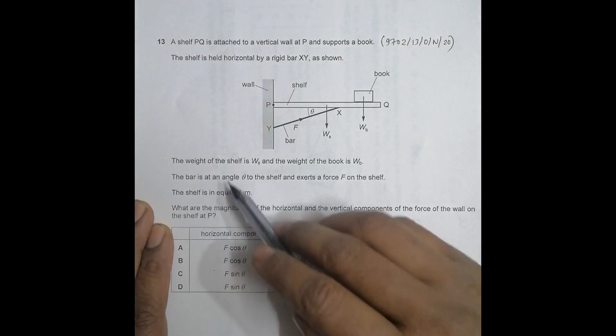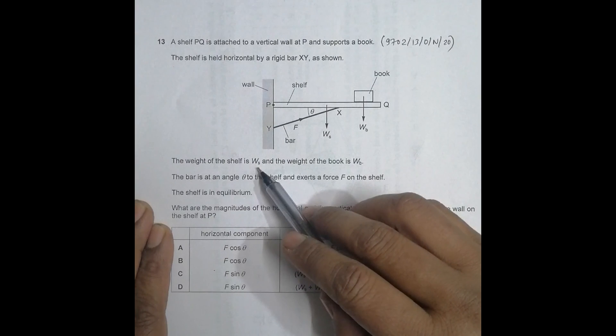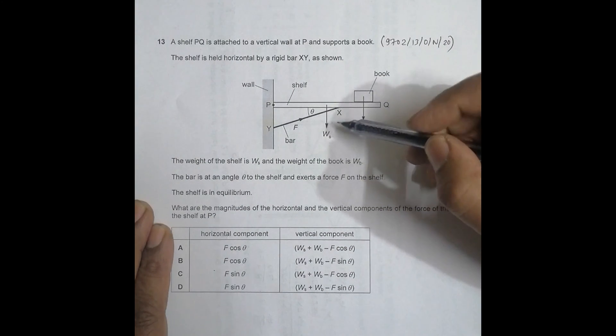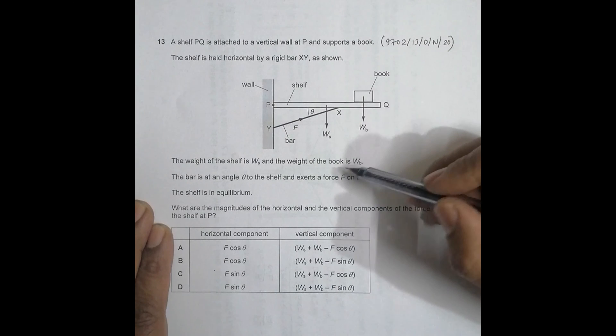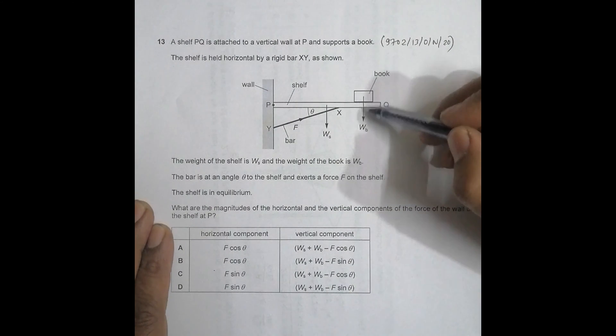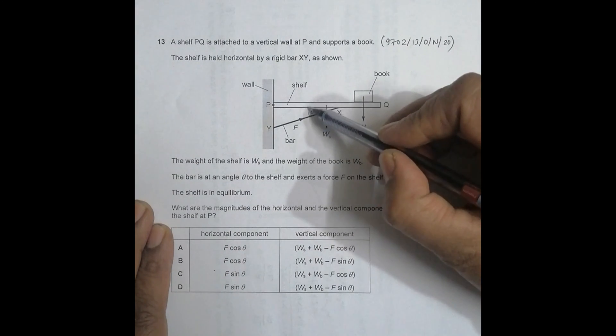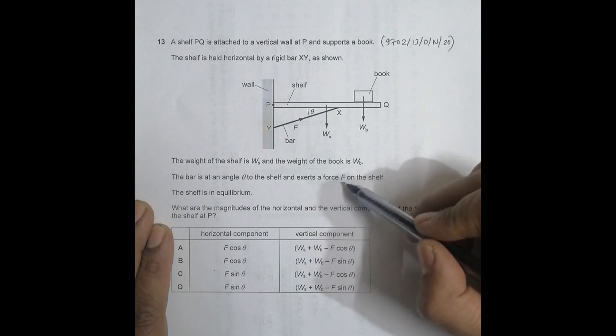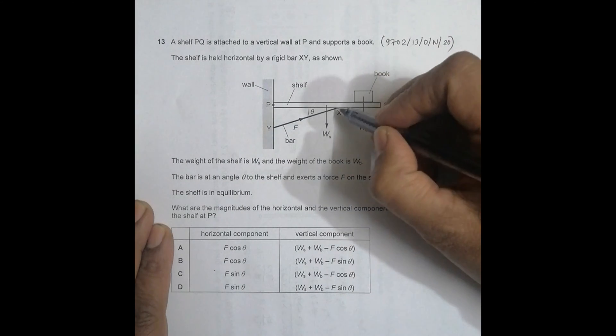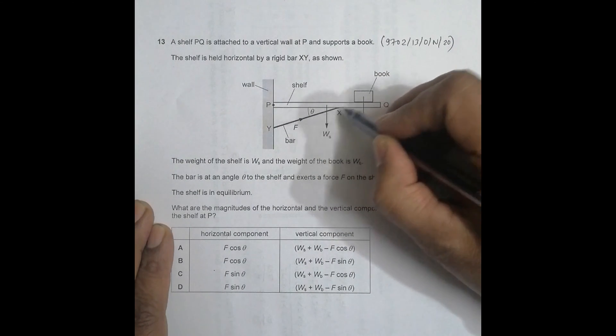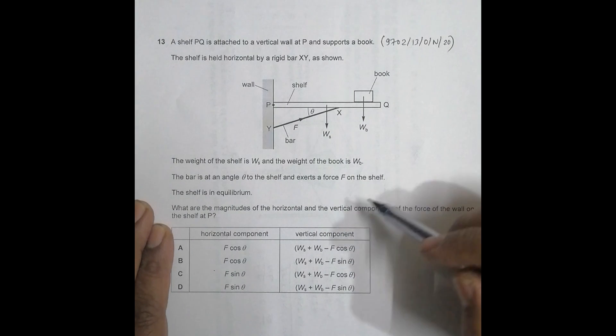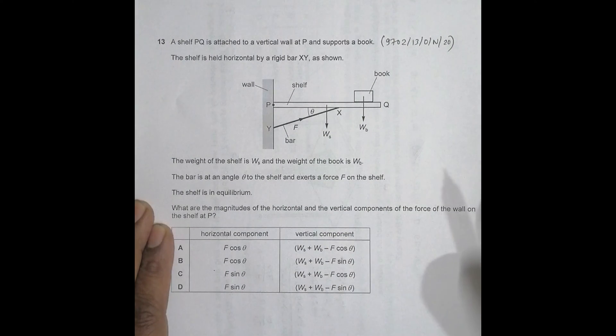The weight of the shelf is WS acting along the center, and the weight of the book is WB acting through the center of the book. The bar is at angle theta to the shelf and exerts a force F on the shelf. The shelf is in equilibrium, so it's at rest. Definitely a bookshelf should be at rest, it can't be moving.